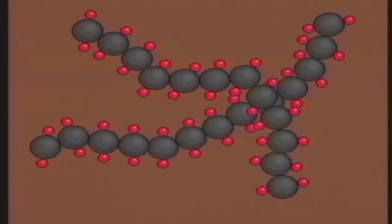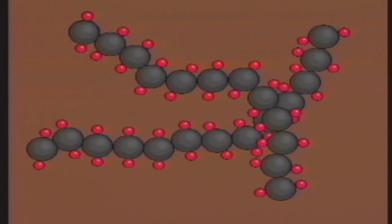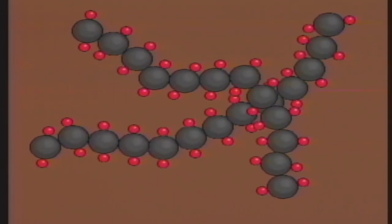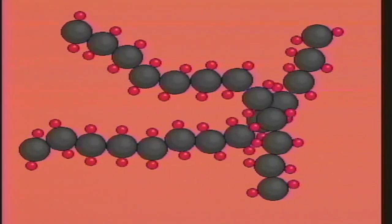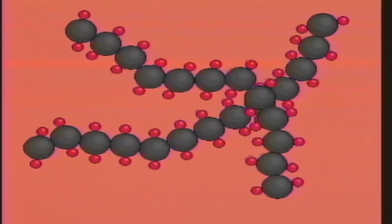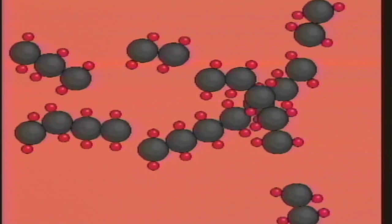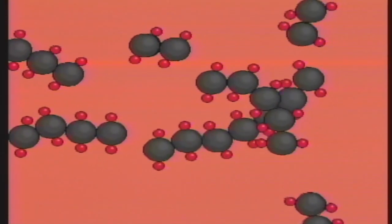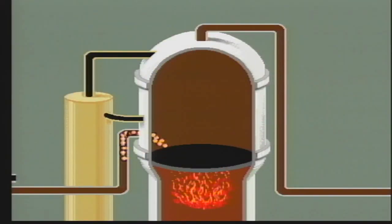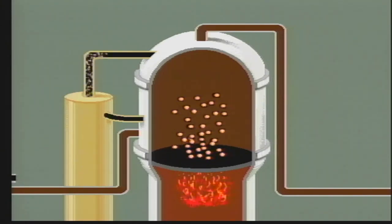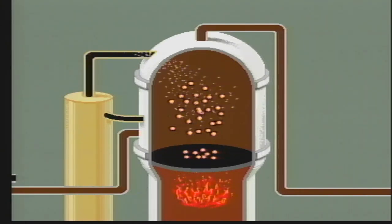The heavier fractions of oil, such as asphalt or fuel oil, can be changed into lighter products using a process called cracking. By applying heat or adding a catalyst such as aluminum silicate, large hydrocarbon molecules can be broken into smaller hydrocarbons. This way, crude can be made into a variety of petroleum products.